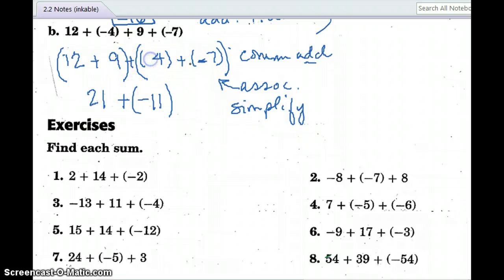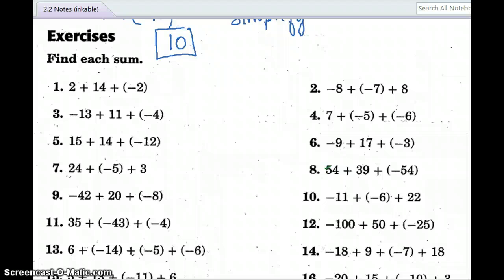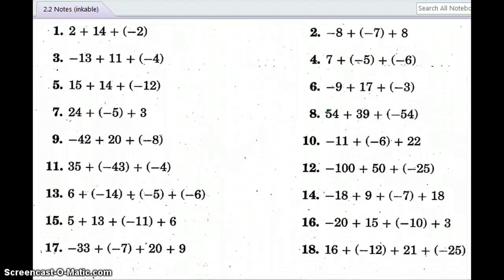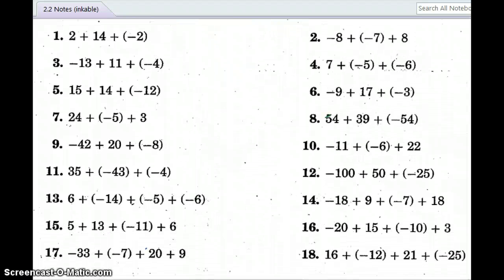And now I'm ready to simplify. So I did sort of skip a step, but I said it, I just didn't rewrite it. I associated 12 with 9 and negative 4 with negative 7. I'm sorry, I made that negative so messy. There, I can clean it up. So opposite signs. What do I do, class? You subtract and keep the sign of the larger absolute value. So when I subtract 21 minus 11, I get 10.